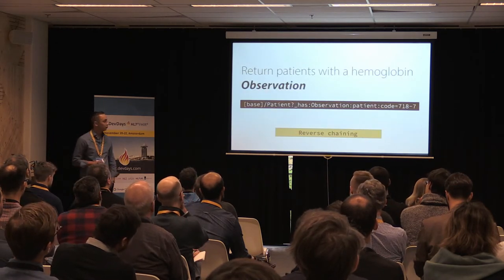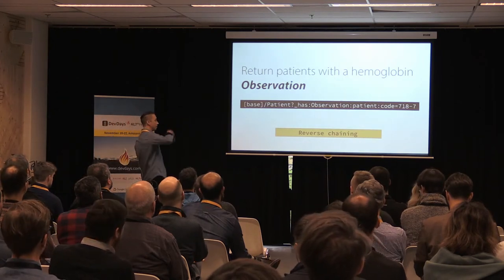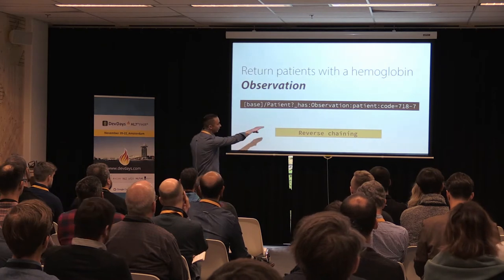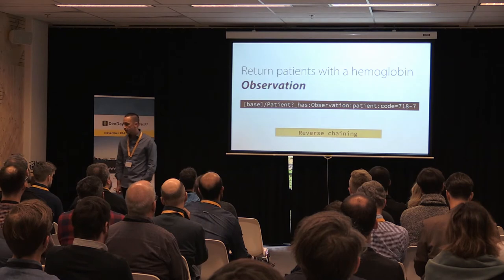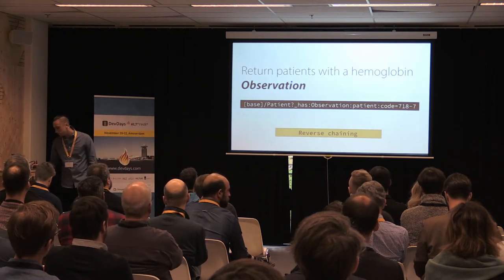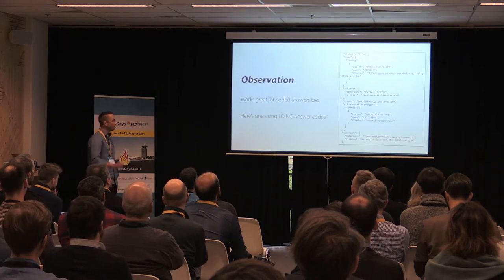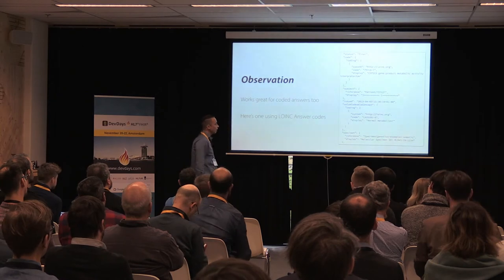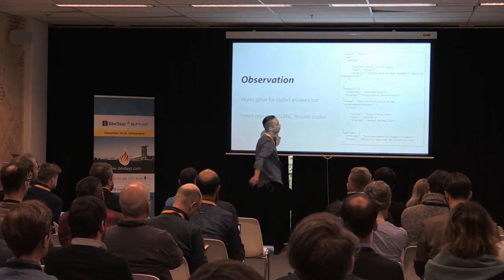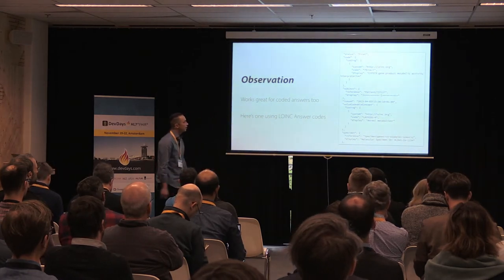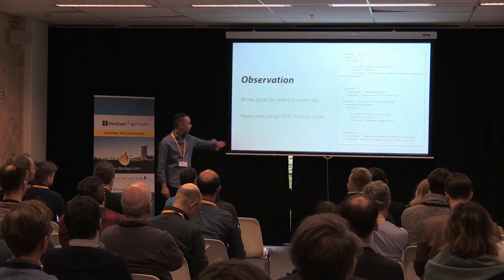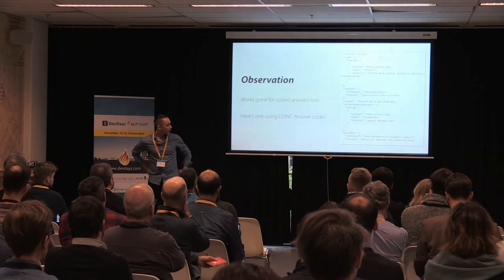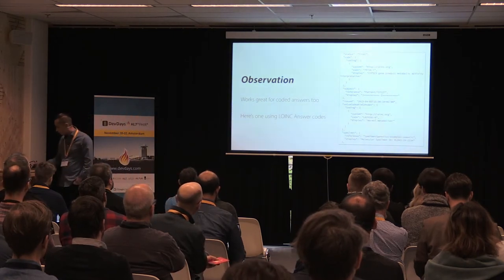You can also do reverse chaining and query a FHIR server to return all patients that have had a hemoglobin level — passing patient resources that have an observation with the code 718-7 representing hemoglobin. The same thing works great for coded observation results. If you want to store an observation result that's coded rather than quantitative, you use a LOINC code to identify the test. In this case, we're talking about a CYP gene metabolic activity interpretation using CPIC, and the result value is coded with an LA code — a LOINC answer code — for normal metabolizer.